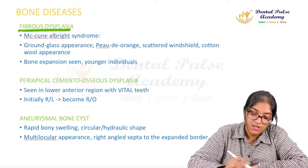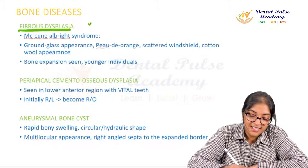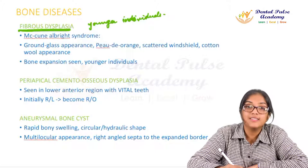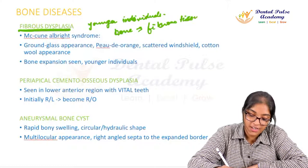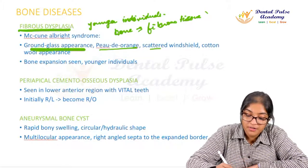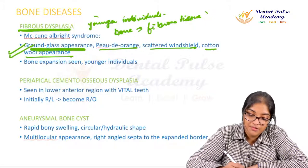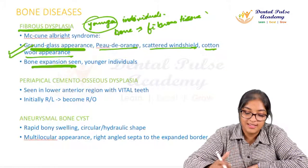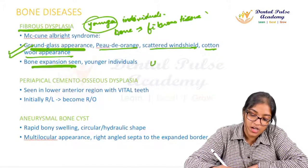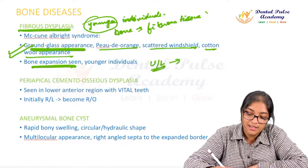Fibrous dysplasia is a fibro-osseous lesion where normal bone is replaced by fibrous tissue, seen in younger individuals and associated with syndromes like McCune-Albright. The altered architecture appears as ground glass, peau d'orange, scattered windshield, or cotton wool appearance. The lesion is expansile and generally seen unilaterally, though bilateral involvement occurs in extensive cases involving multiple bones.